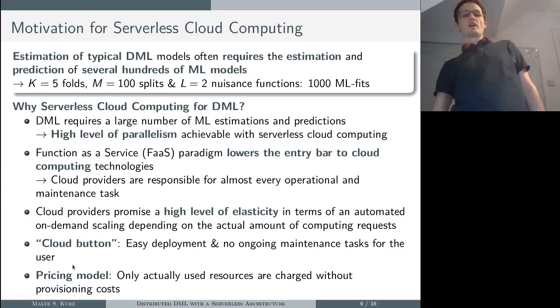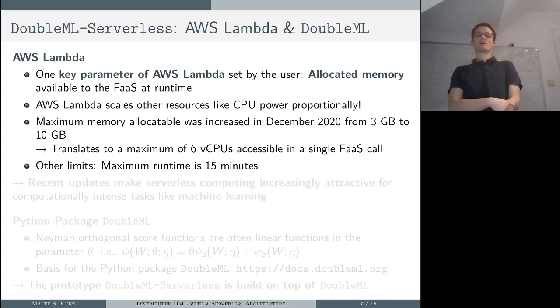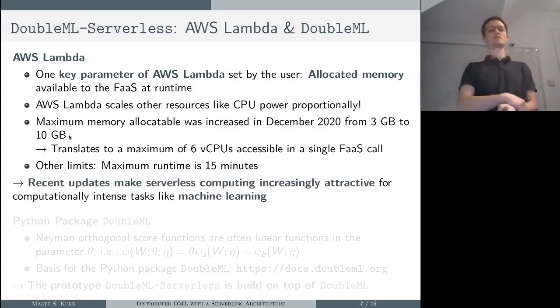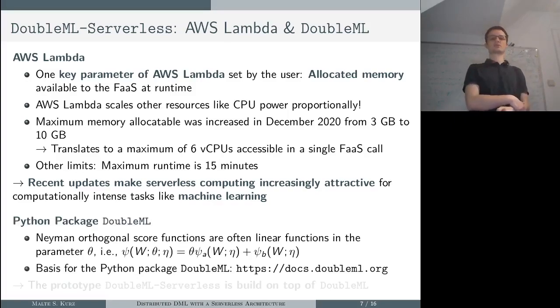It's also easy to deploy, and the pricing model is quite attractive because you only get charged for the actually used resources and have no additional provisioning costs. What is our DoubleML-Serverless prototype based on? We implemented for AWS Lambda for the serverless platform. There's one key parameter you should know and that's the allocated memory. It sounds like only memory, but AWS Lambda scales other resources proportionally to this parameter, so it's the key parameter the user has to select. Recently the maximum memory allocatable was even increased quite significantly from 3 to 10 gigabytes. Therefore, serverless cloud computing is becoming increasingly attractive for computationally intense tasks like machine learning.